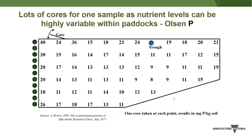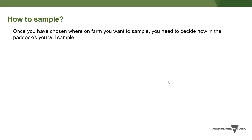Why take so many cores? An image from the McCallister Research Farm showing Olsen P values across a paddock illustrates the highly variable nutrient status within a single paddock. Near the gate you might get readings of 40, 30, 24, 19 — much higher than below the trough where values are 9, 9, 8, 9. That's why we composite and take as many samples as possible — to average out that variation and get the most representative sample.